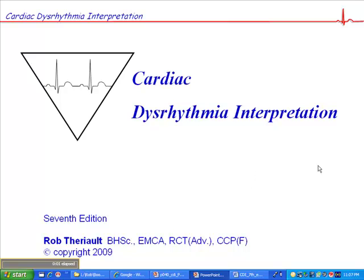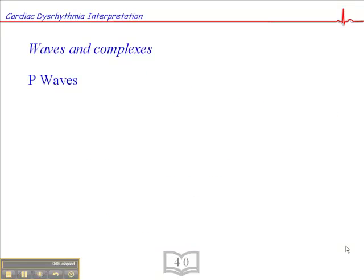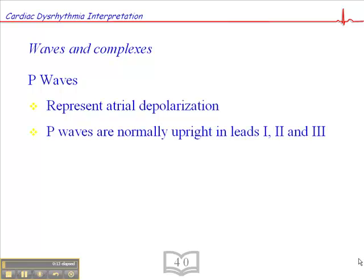Now I want to talk about P-Waves, and this is located on page 40 of your workbook. So P-Waves, as we discussed much earlier on in this lesson, represent atrial depolarization. So that's a wave of depolarization across both atria.